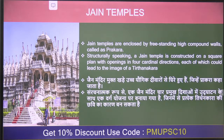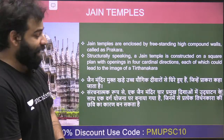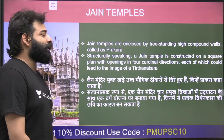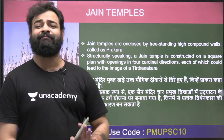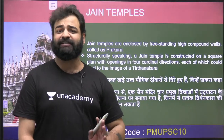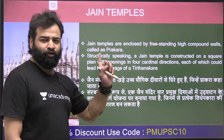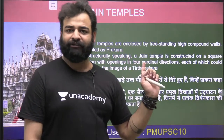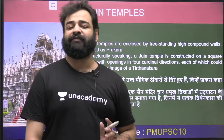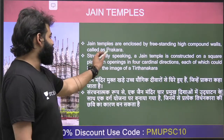A term called prakar was asked about. Jain temples have compound walls. Just like South Indian Dravida architecture temples have compound walls, Jain temples also have their own compound walls, and the name given to these compound walls is prakar.